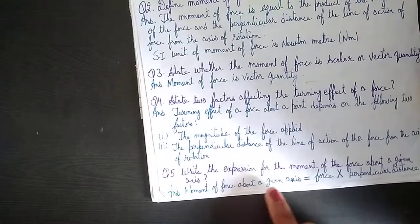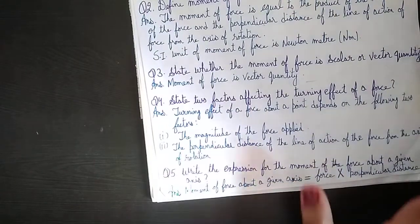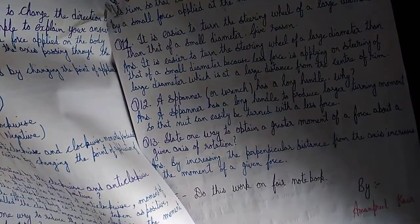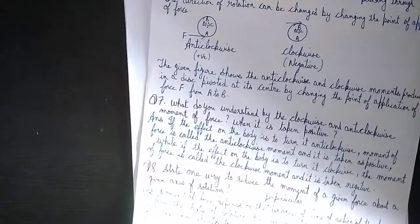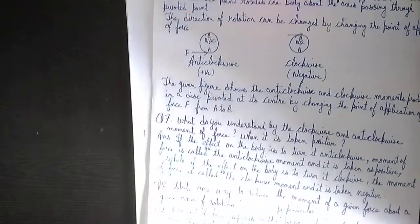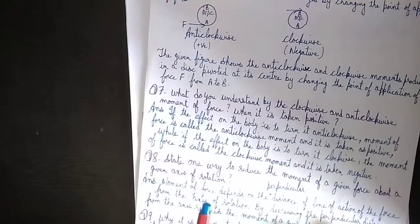Write the expression for the moment of force about a given axis. The moment of force about a given axis is equal to force multiplied by the perpendicular distance of the force from the axis of rotation.